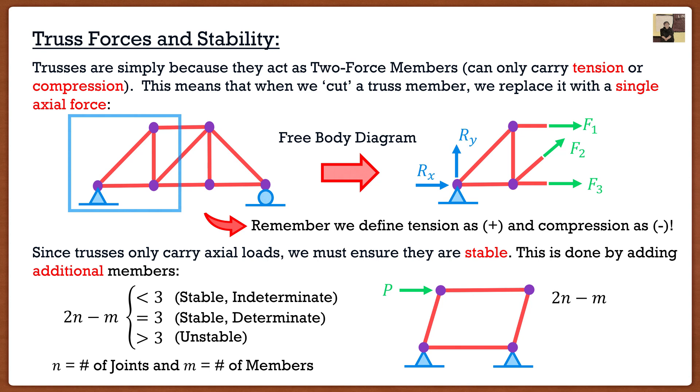So if I were to do the math and say, I have my equation 2n minus m. I look here and I say, okay, I have four joints, the four purple dots, and I have four members, the four red lines. So I go two times four minus four, I get four. And we know that this right here is greater than three. So it falls into that third case where our truss is unstable. So the math backs up what we can visually see.